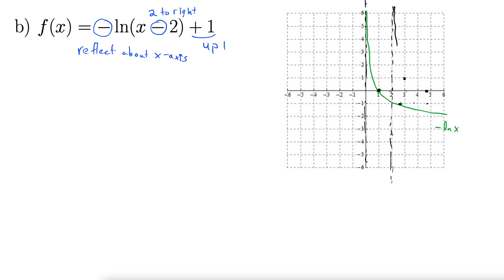So I'm going to come in along this asymptote, hit these two points, and then head out to infinity like that. And there's our new graph for negative natural log (x minus 2) plus 1.